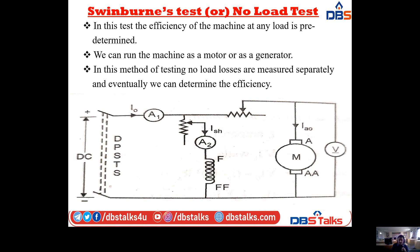The diagram for Swinburne's test uses a DC supply through a DPST switch. Ammeter A1 measures the no-load input current, and Ammeter A2 is connected to the field winding to measure the shunt field current. A voltmeter is connected across the motor to measure the supply voltage, and the no-load armature current is also recorded.